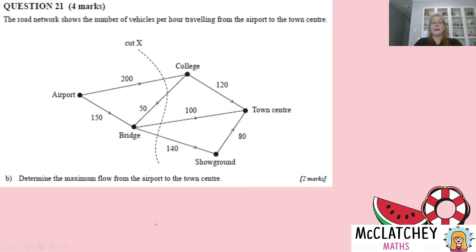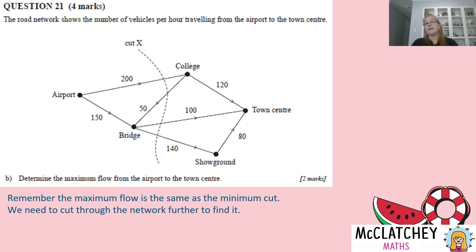Let's jump on to part B. Determine the maximum flow from the airport to the town center. So what is the most that can actually go through the network? Now there's a couple of different ways you can go about this. We're going to use maximum flow, minimum cut. You remember that the maximum flow through any network is going to be the same as the lowest cut that you can put through the network. So we're going to have to add more than just cut X. We're going to have to add a bunch of cuts through the network and work out which is the smallest.